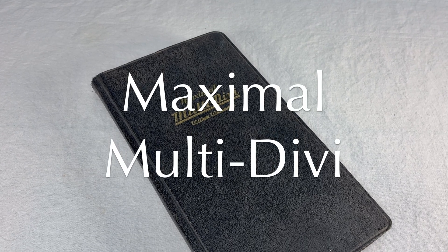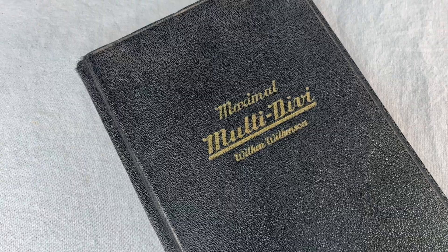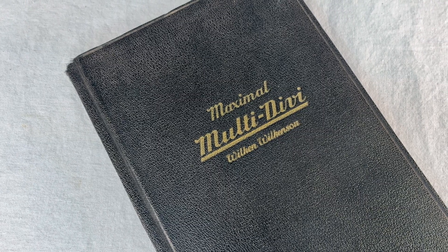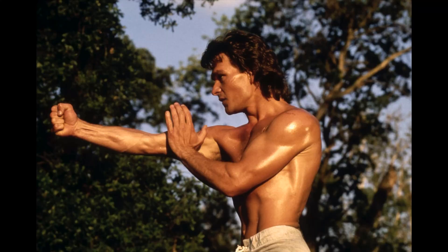This is the Maximal Multi Divi, first published in Sweden by Vilken Vilkensen in the 1910s. Mine was printed in 1951. Thanks to Patrick for telling me about it.